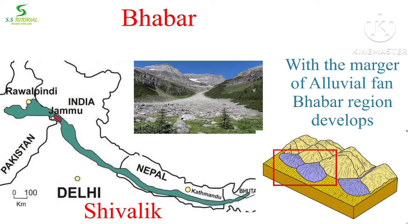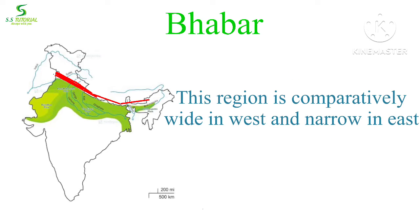With the merger of these alluvial fans, the Bhabar region developed. This region is comparatively wide in the west and narrow in the east.